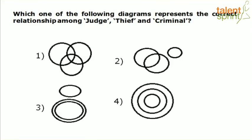Next: establish the relationship between judge, thief and criminal. A thief is a criminal — he has committed a crime. But a criminal need not be a thief. Every thief is a criminal, but every criminal is not a thief. There are different types of crimes — theft is one of them. A murderer is also a criminal but not a thief. So the point is: every thief is a criminal, but every criminal is not a thief.